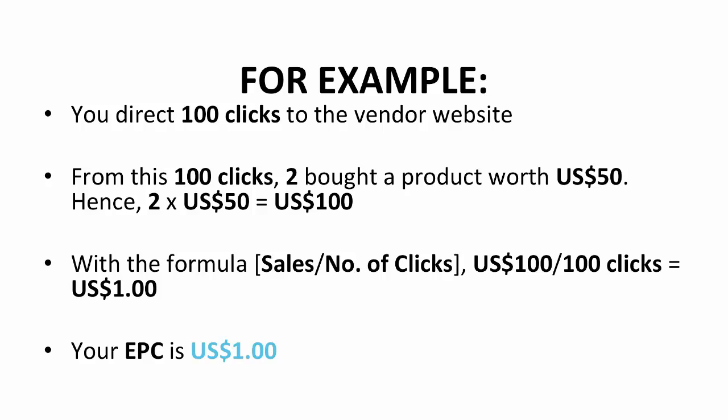Picture this scenario. Let's say you're able to direct 100 clicks to the vendor website through your affiliate link, and from these 100 clicks, two of them made purchases of a product worth $50. So $50 times 2 equals $100. That's your sales, the money you've made. Now use the formula to find EPC, which is sales divided by the number of clicks. What you make from sales here is $100 divided by the number of clicks, which is 100 clicks. The answer would be the EPC. In this case, the EPC is $1.